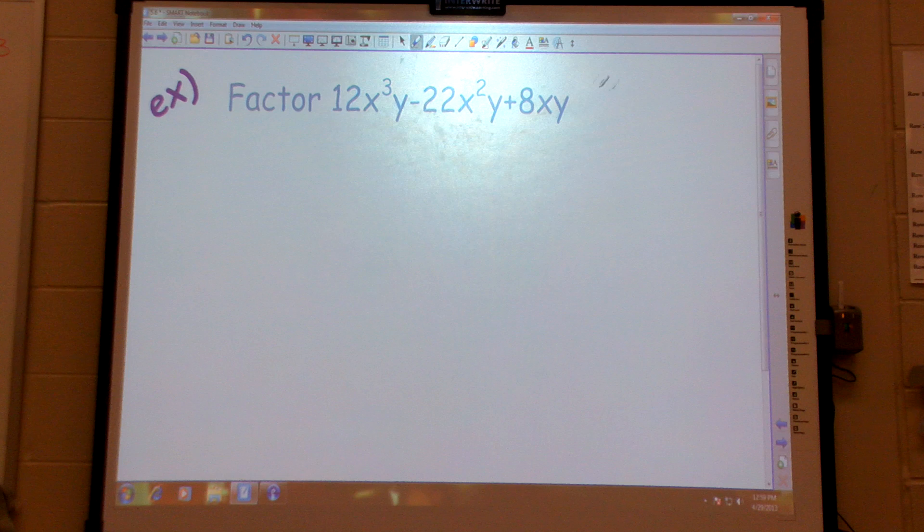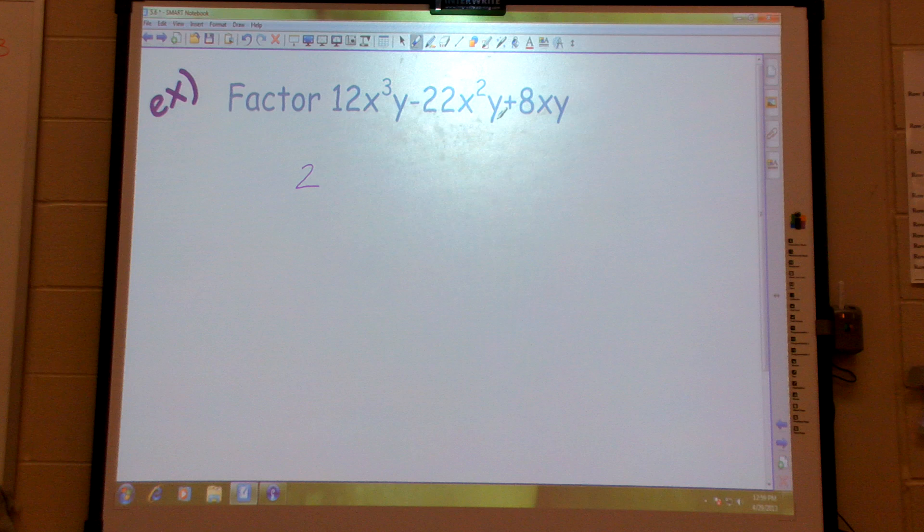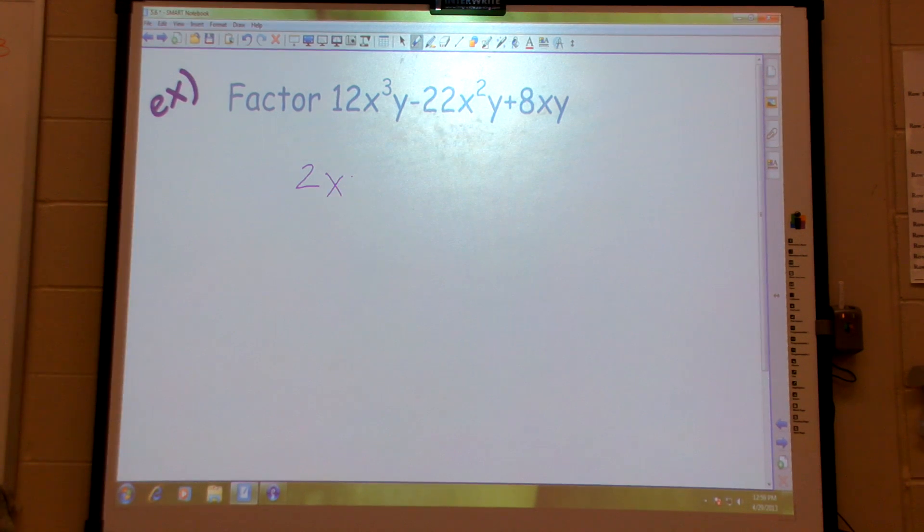It's not an x squared x constant. So what's my GCF? First of all, look at the constants. What will go into all those numbers? Two. Now look at your x's. Just an x and then a y.